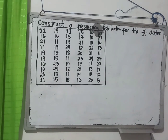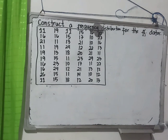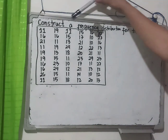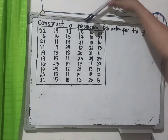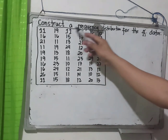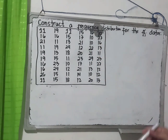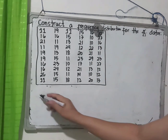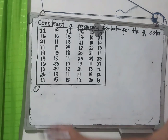Hello everyone, welcome to Mathematics Tutorial. Today we will discuss how to construct a frequency distribution for given data. There are four to five steps in order to construct a frequency distribution.